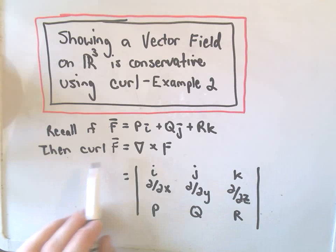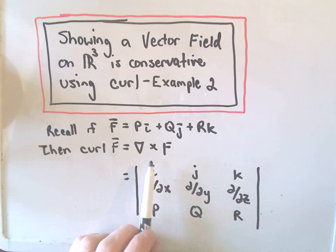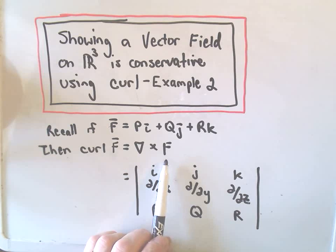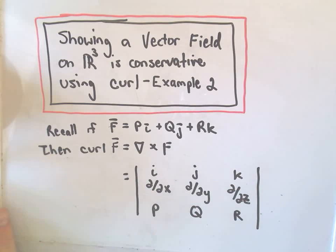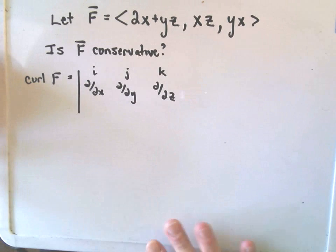And remember the curl of F is defined to be the cross product between this del operator and your vector field F. And in the first video we talked about this a little bit more, so I'm going to go through this one a little bit quicker.